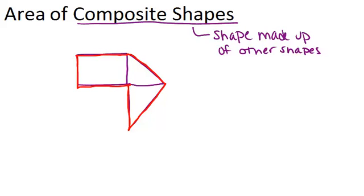And if the area of the rectangle was 16 units squared, and the area of this triangle was 7 units squared, and the area of the other triangle was 9 units squared, then the area of this composite shape would be 16 plus 7 plus 9. So the area of a composite shape is the sum of the area of its parts.